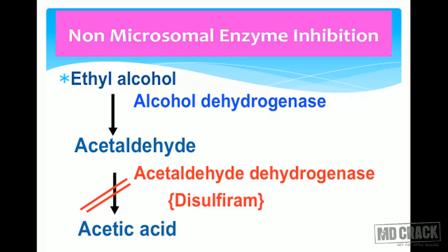Now we move on to non-microsomal enzyme inhibition. A classical example is disulfiram, an acetaldehyde dehydrogenase inhibitor, which inhibits the breakdown of acetaldehyde. If the patient has consumed alcohol, acetaldehyde accumulates inside the body and the patient gets a severe reaction called alcohol intolerance. We use disulfiram as an aversive stimulus to alcohol intake.